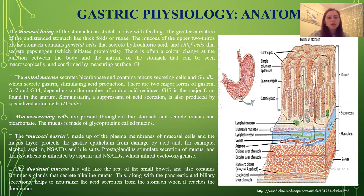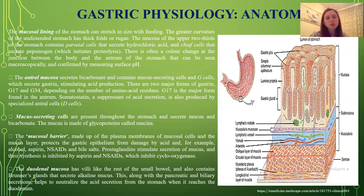Mucus-secreting cells are present throughout the stomach and secrete mucus and bicarbonate. The mucus is made of glycoproteins called mucins. The mucosal barrier, made up of the plasma membranes of mucosal cells and the mucus layer, protects the gastric epithelium from damage by acid and, for example, alcohol, aspirin, non-steroidal anti-inflammatory drugs and bile salts. Prostaglandins stimulate secretion of mucus, and their synthesis is inhibited by aspirin and NSAIDs which inhibit cyclooxygenase. The duodenal mucosa also contains Brunner's glands that secrete alkaline mucus. This, along with pancreatic and biliary secretion, helps to neutralize the acid secretion from the stomach when it reaches the duodenum.